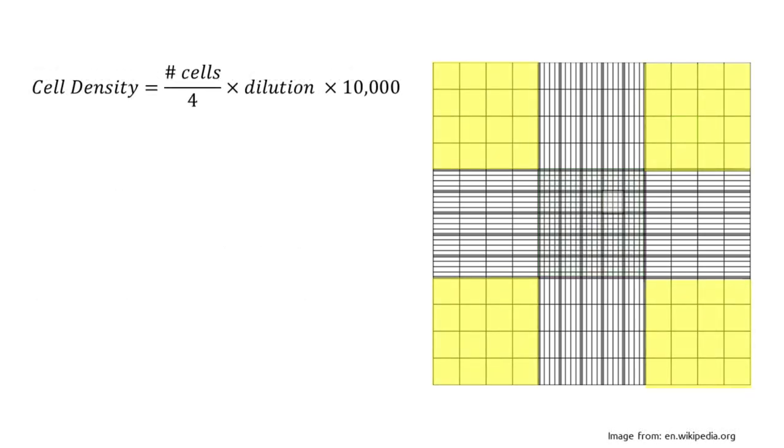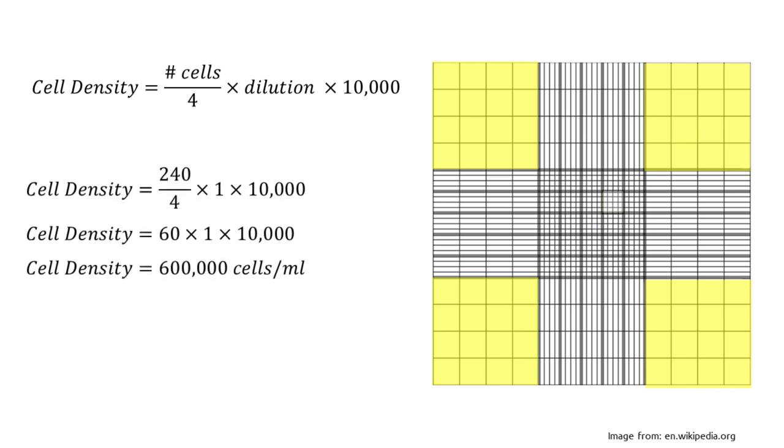For the corner regions, assuming you counted all four corners, you first want to divide your count by 4 to get the average number of cells per 1 millimeter by 1 millimeter grid region. After this the math is the same as with the center region. Multiply this average count by your dilution factor and then by 10,000 to get your cell count. So if we counted 240 cells across all four corners we'd have an average of 60 cells per 1 millimeter by 1 millimeter region. Assuming the mixture was undiluted this would be 600,000 cells per milliliter.